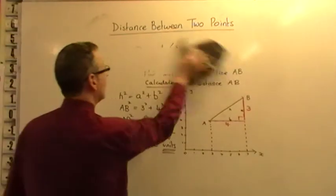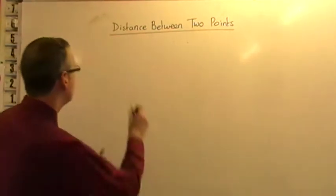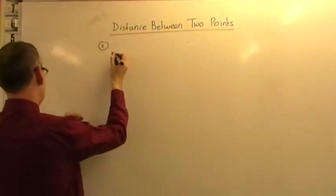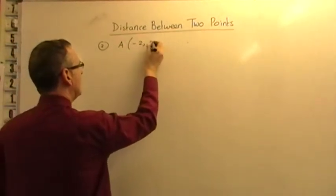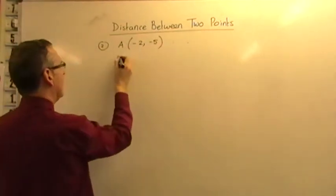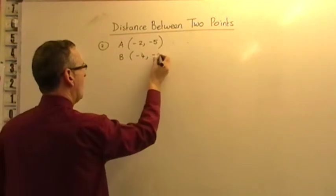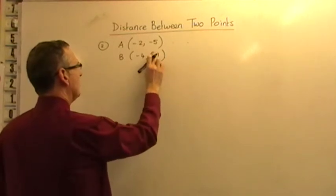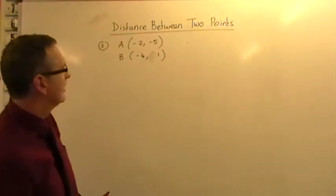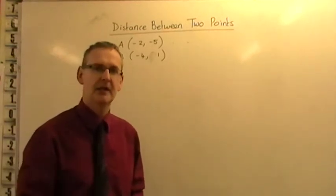So if I look at a second question, I'm going to do the same sort of thing again. Question number two. I'm going to give you two points. A, this time, is (-2, -5). And B is going to be, let's say it's (-4, 1). And I'm going to say to you, I want to join those two points up, get a straight line, and calculate the length of the line AB.